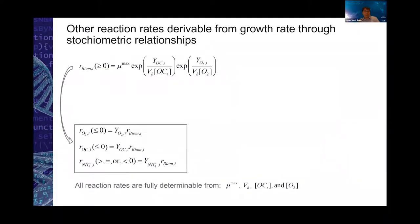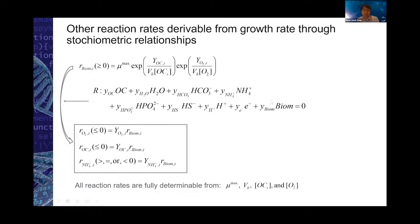If we know the growth rate — the production rate of biomass — it is possible to derive other reaction rates by their stoichiometric relationships. Whenever one mole of biomass is produced, how many moles of organic carbon and other components need to be consumed or produced is given by the stoichiometric reaction. For example, the oxygen consumption rate is just the stoichiometric coefficient Y_O2 multiplied by the biomass production rate, and similarly for organic carbon and ammonium. In the case of ammonium, the sign of production or consumption will depend on the chemical structure of the organic carbon. To determine this kinetic equation, we need to define mu_max — the maximal growth rate constant — as well as V_H, the harvest volume, and the organic carbon and oxygen concentrations.